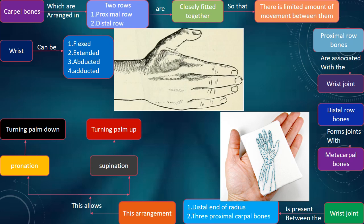The wrist joint is present between the distal end of the radius and three proximal carpal bones. This arrangement allows pronation and supination. Pronation is turning the palm down, supination is turning the palm up.